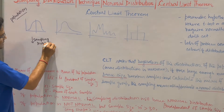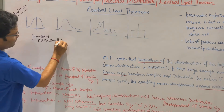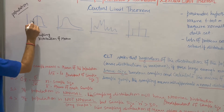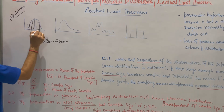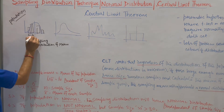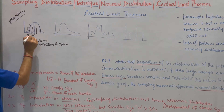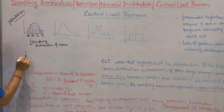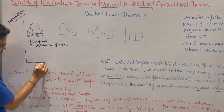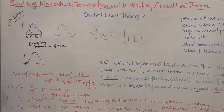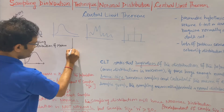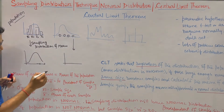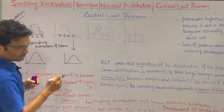If you take the sampling distribution and draw the means — suppose you take this set of data, this set of data, this set of data, this set of data. Suppose these are x1-bar, x2-bar, x3-bar, x4-bar — and if you draw these, magically you will see you get normally distributed data. So if data is any shape and you take samples and draw the sampling distribution of the means, you will magically get a normal distribution.